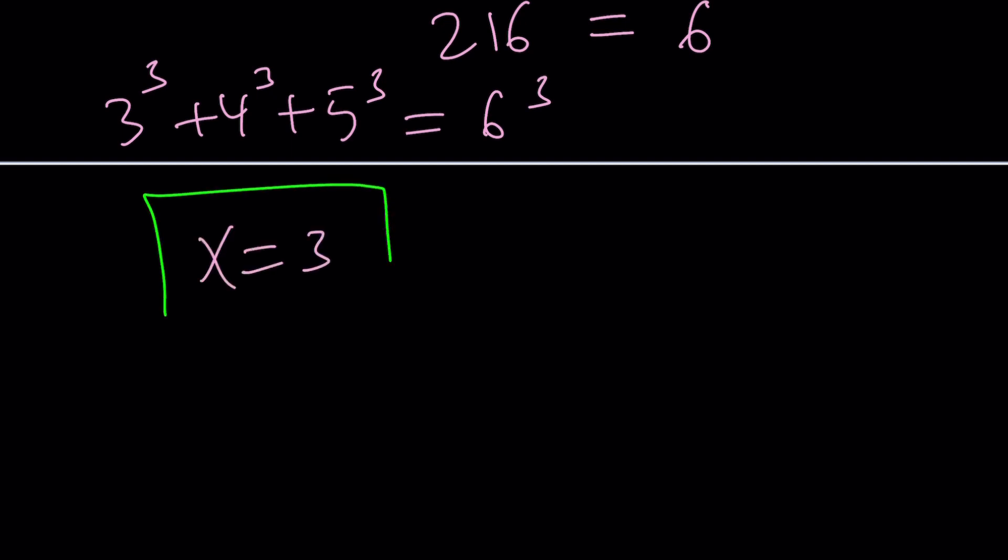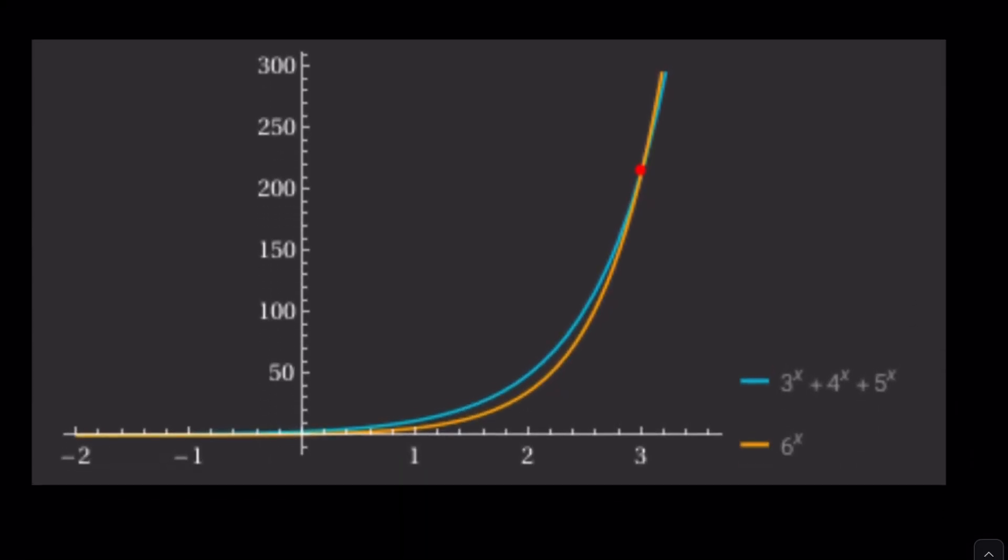Let's go ahead and take a look at the graph of these two functions and see where they intersect. Ta-da! Yes, thanks to Wolfram Alpha, we know that these two graphs will intersect at x equals 3 and only at x equals 3. Notice that they're both increasing, but they cross each other once and then they part their ways because of the way they grow.